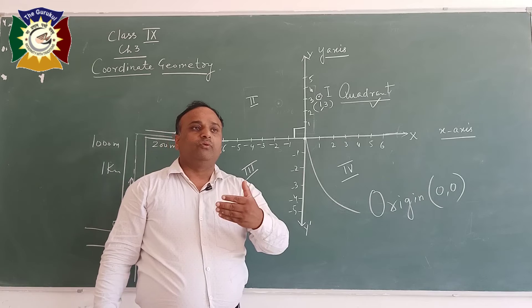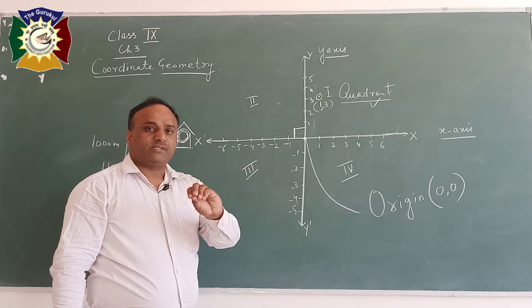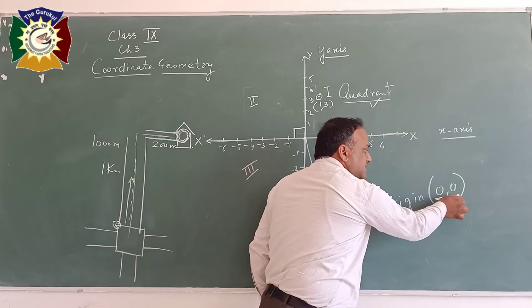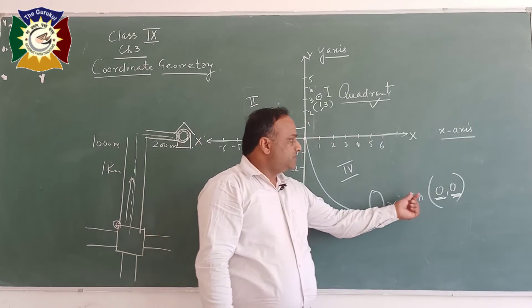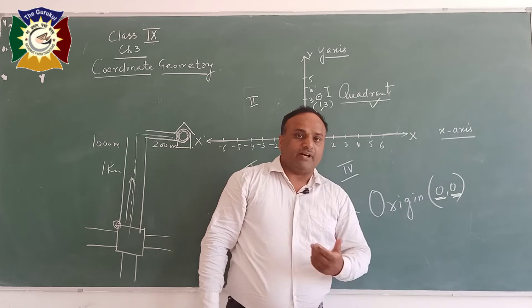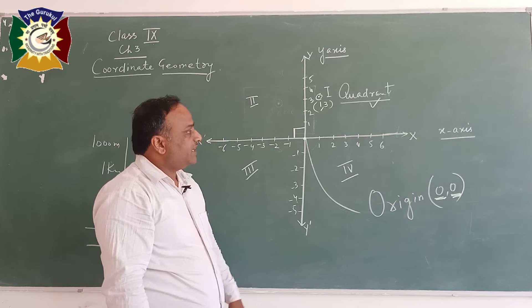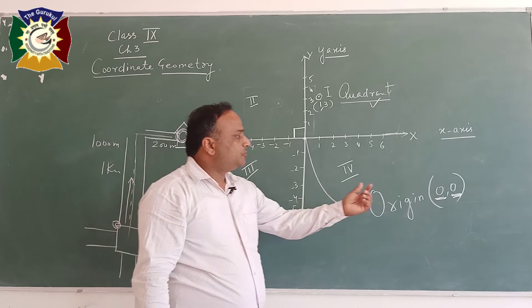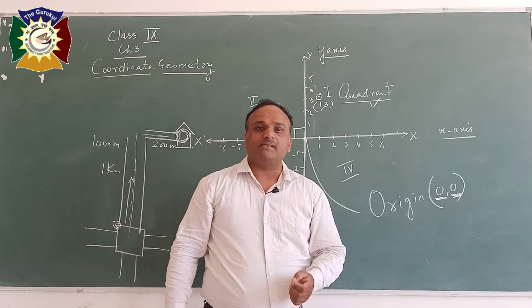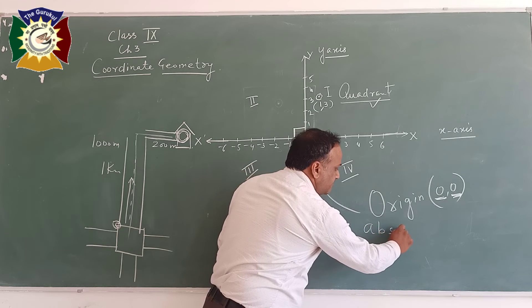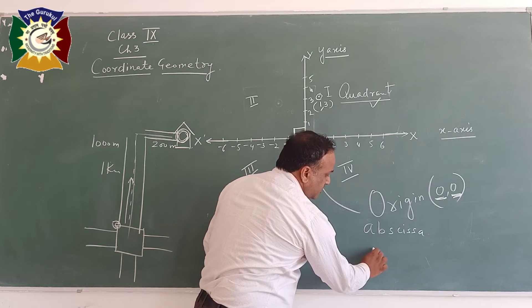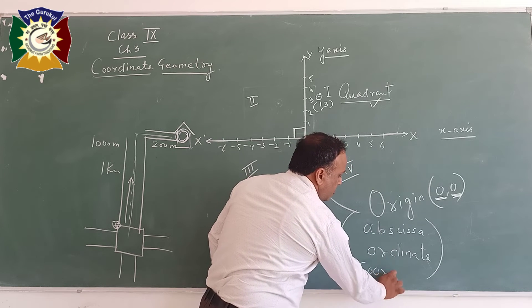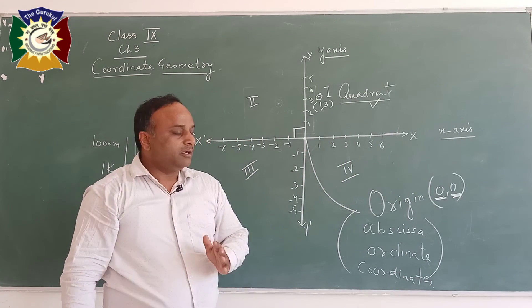Similarly, if any point is (-4, 0), minus 4 comma 0 means first of all we have to go on x-axis, because first is for x-axis and second is for y-axis. Always, first of all we write x, then y. This is the convention for the whole world. It should be like this is x-axis, this is y-axis. And x-axis name is abscissa, and y-axis name is ordinate. And if you combine all these, it becomes coordinates of a particular point.